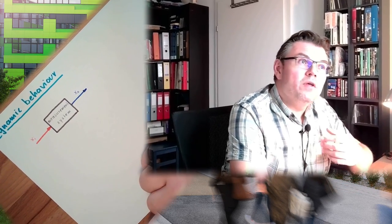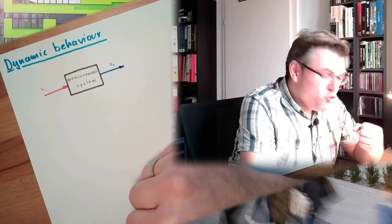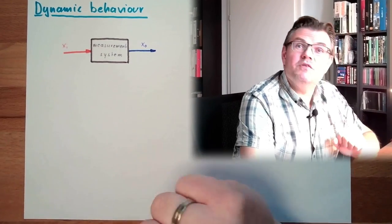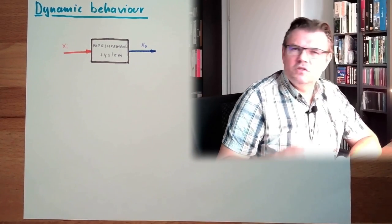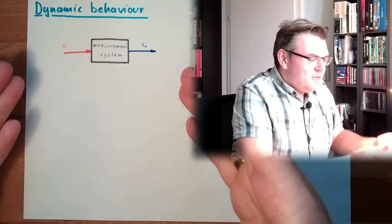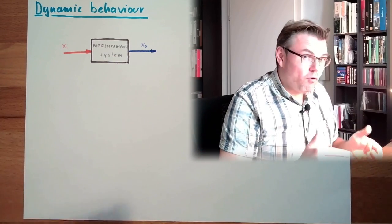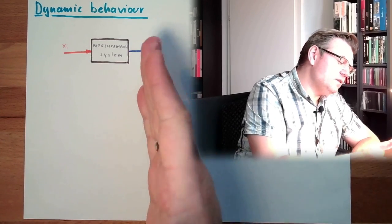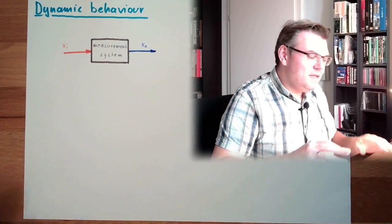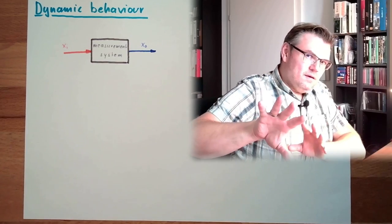This is actually what we have already talked about in static behavior. We have some measurement system, we have an input value and we have an output value. The input value is the physical entity, the physical unit which is influencing the measurement system, which I want to determine. And XO, the output, is the display value. This was pretty much the same picture as I've drawn for the static behavior. There is some sort of characteristic between XO and XI, and there is the sensitivity, static.